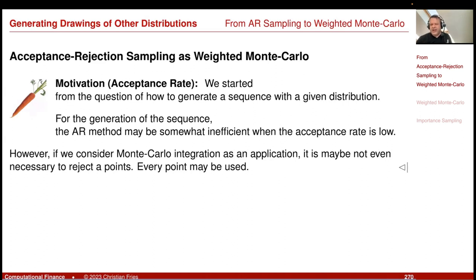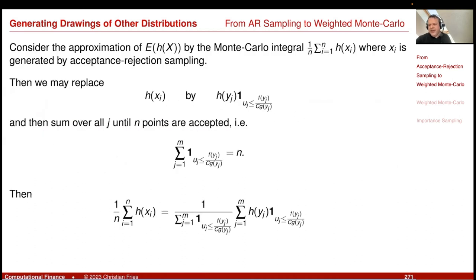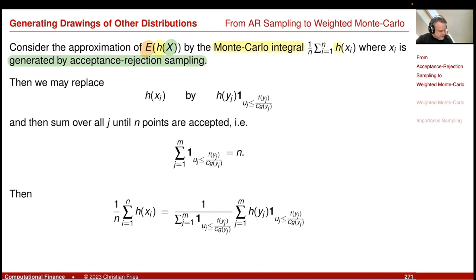We started from the question of how to generate a sequence of a given distribution. The acceptance-rejection method looks somewhat inefficient when the acceptance rate is low, because then we just throw away points. When we look at the Monte Carlo method, we see that maybe we do not need to throw away the point. Consider the case that we like to calculate the expectation of a random variable x plugged into some function h, where x is generated by acceptance-rejection sampling. If we do the Monte Carlo approximation, we calculate 1/n times the sum over all h(x_i), where x_i is generated by acceptance-rejection.